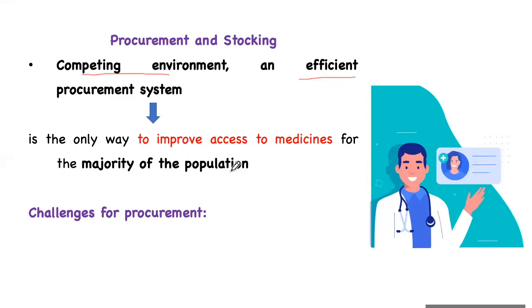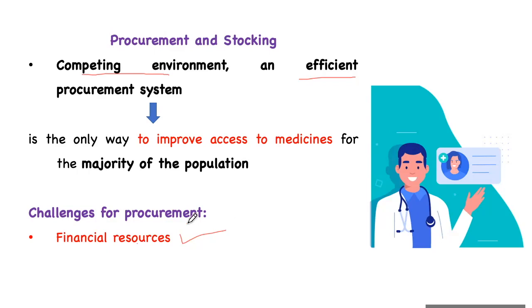So let's see what are the challenges for procurement. Basically there are two challenges. The first basic challenge is financial resources — you want to procure the drug in larger amounts to get more discount, but sometimes financial resources are limited. The stockist may also expect that you are paying on time, and if you are delaying payment, sometimes he may not give you an offer or that much discount. So financial resources is always one of the bigger challenges in the efficient procurement system.